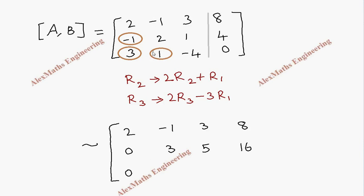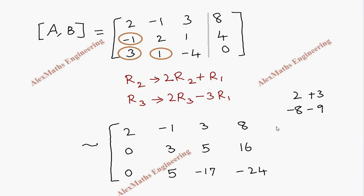Then 2 times this is 2, and minus 3 times this gives plus 3, so totally this is 5. Then minus 8 — when I multiply 2 times and minus 3 times 3 gives 9 — so it is minus 17. And here minus 3 times gives minus 24. So we have completed this row operation for the augmented matrix [A|b], and we made these two elements zero.